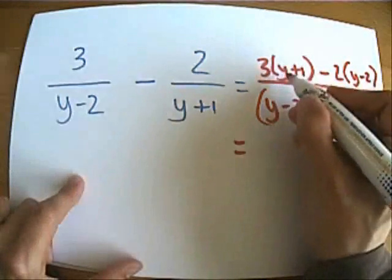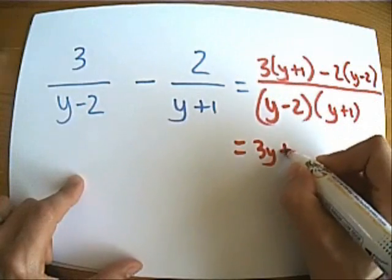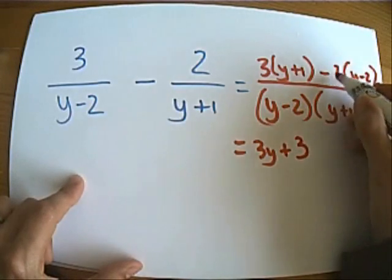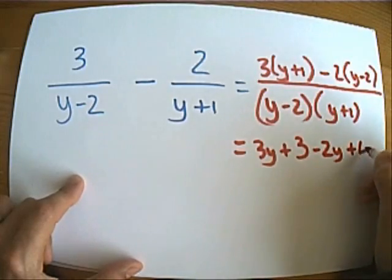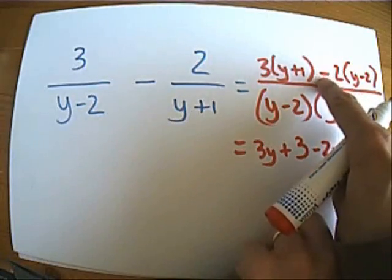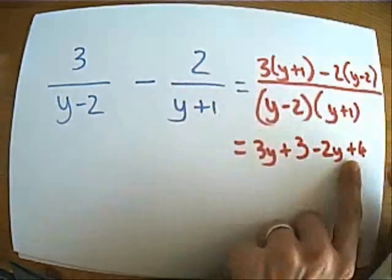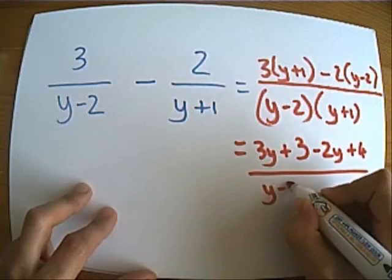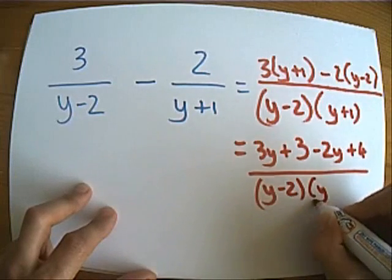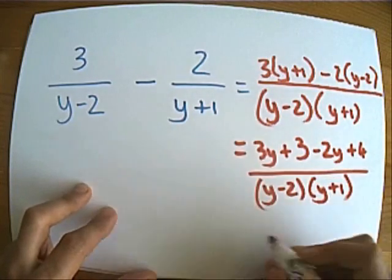Let's expand the brackets on the top. 3y plus 3. Now do this bit: take away 2y plus 4. This is where a lot of people would go wrong. But remember, it's minus 2 times minus 2, so it's plus 4 there. All over y minus 2 times y plus 1.